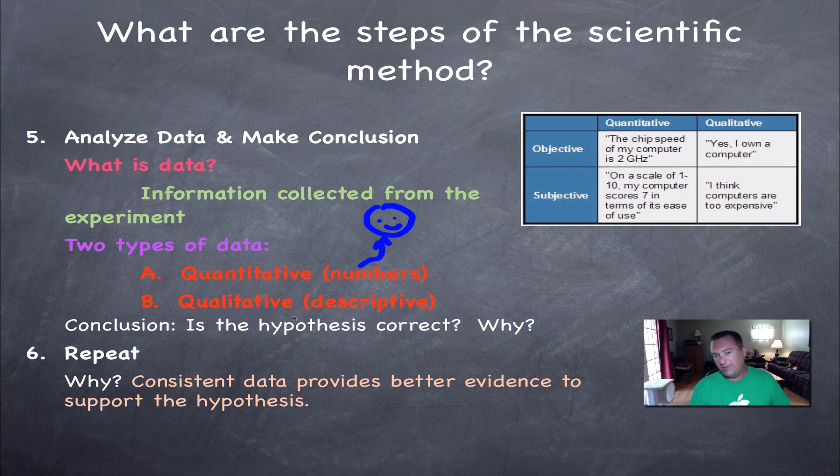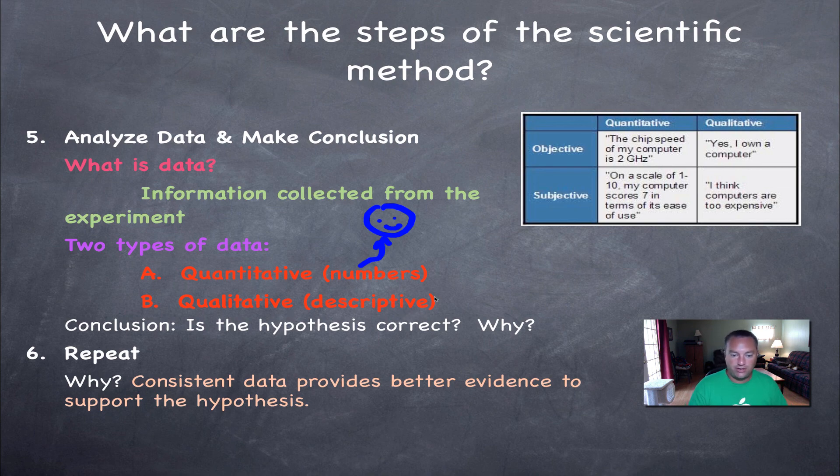Sometimes you're doing field work. Maybe you're working with animals or insects. You can't collect numbers. So then you've got to describe what they're doing. And this would be qualitative. It's descriptive. Now over here, look at this little table here. We've got two types of data, quantitative and qualitative. Notice over here on the qualitative, there's no numbers. But over here on the quantitative, you're going to see numbers. So here we got an objective, quantitative data. The chip speed of my computer is two gigahertz. That is a true object. Qualitative is, yes, I own a computer. Subjective. On a scale of one to 10, my computer scores a seven in terms of ease.